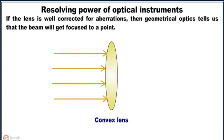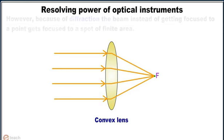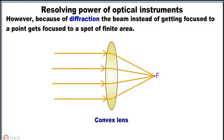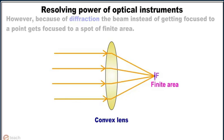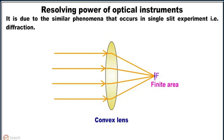If the lens is well corrected for aberrations, then geometrical optics tells us that the beam will get focused to a point. However, because of diffraction, the beam instead of getting focused to a point gets focused to a spot of finite area. It is due to the similar phenomena that occurs in a single slit experiment, i.e., diffraction.